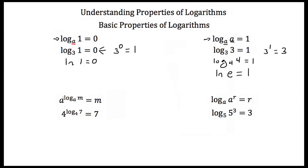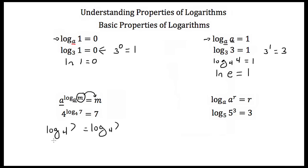Another property is if we have a logarithm in the exponent of another term, and the base of that logarithm is the same as the base of our exponent, then whatever's inside the logarithm is what we're equal to. So if we had 4 to the log base 4 of 7, well, that's just equal to 7. So if you ever have the base of an exponent with a logarithm in the exponent with the same base, just take whatever number's inside that log, because that's what it's equal to.